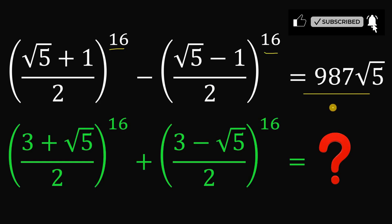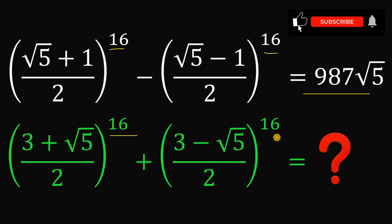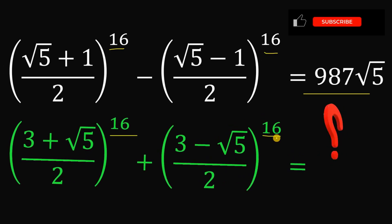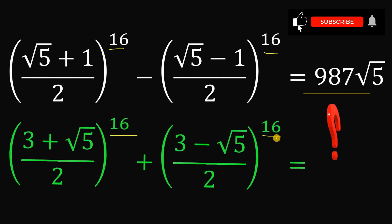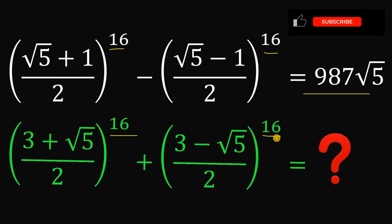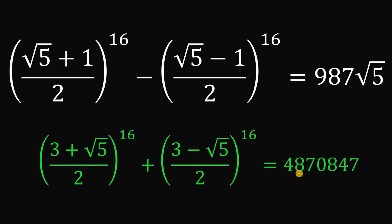This is given as true. Our goal, without using any calculator, is to evaluate (3 + √5)/2 raised to the power of 16, plus (3 − √5)/2 raised to the power of 16. You can pause the video to try it. The answer to this question is 4,870,847.